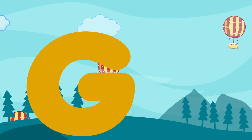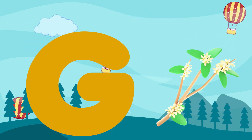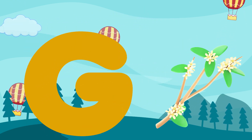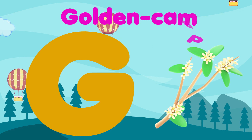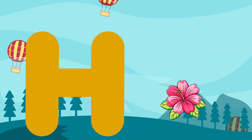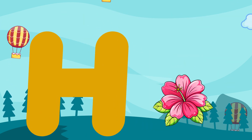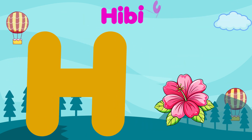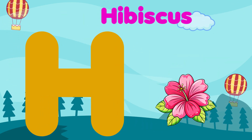G is for Golden Campa. Golden Campa. H is for Hibiscus. Hibiscus.